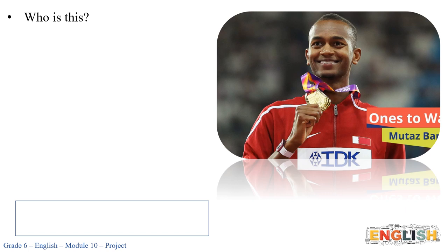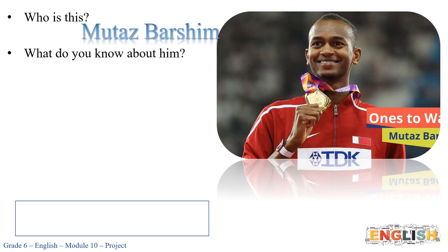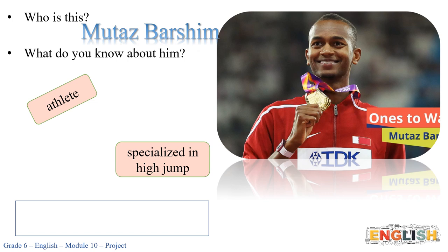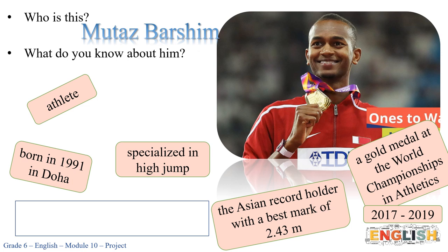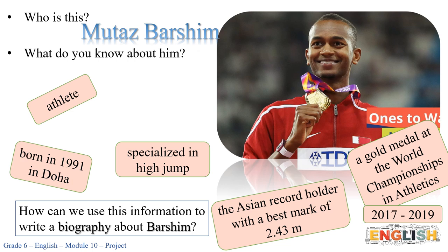Let's start with this person. Who is this? He is Mutaz Barshim. So what do you know about him? He is an athlete specialized in high jump. He was born in 1991 in Doha. He won a gold medal at the world championships in athletics in 2017 and 2019. He is the Asian record holder with a best mark of 2.43 meters.